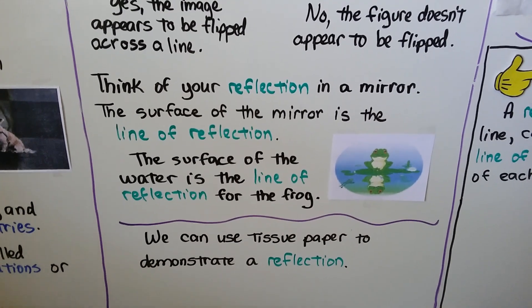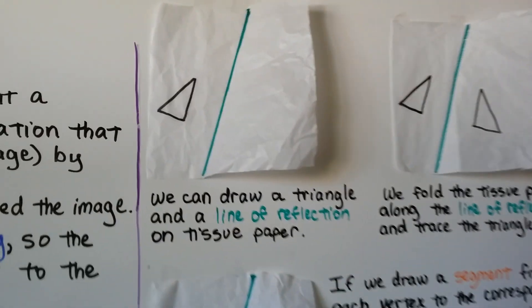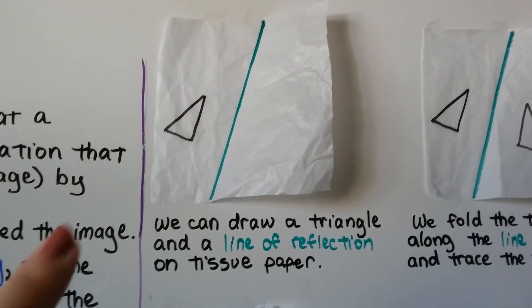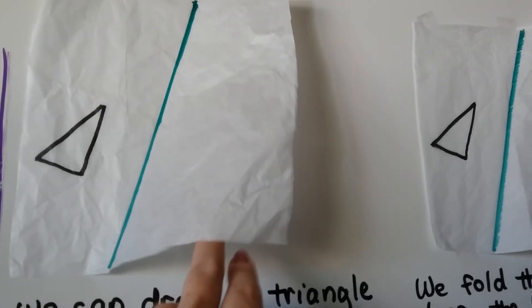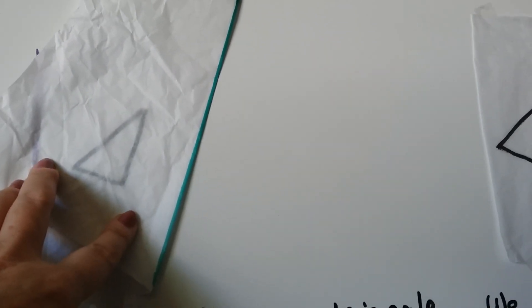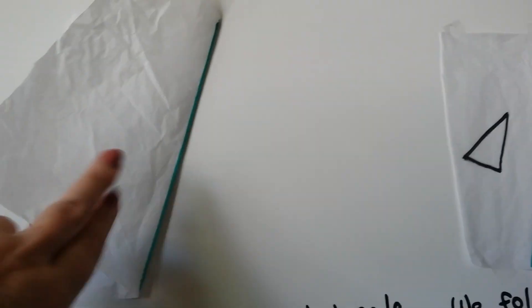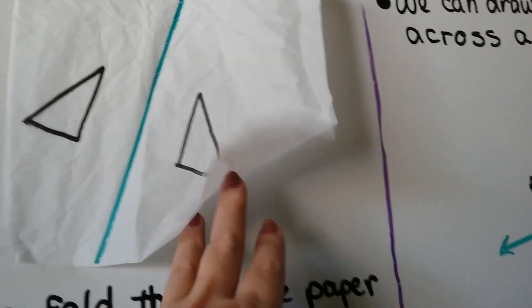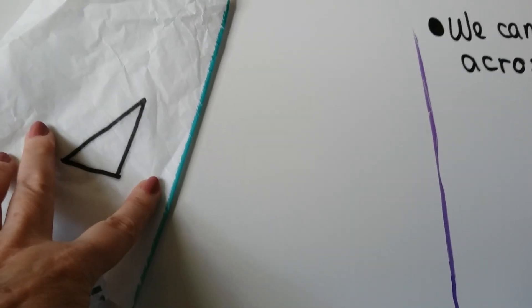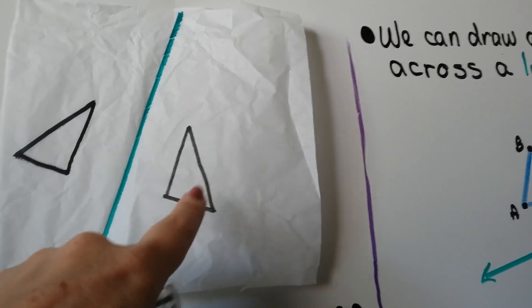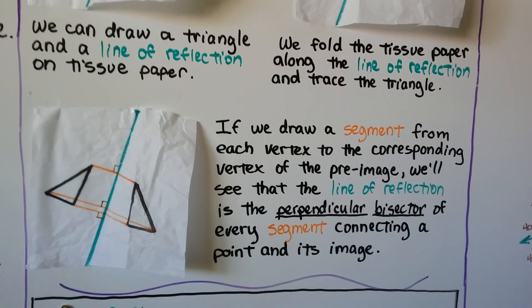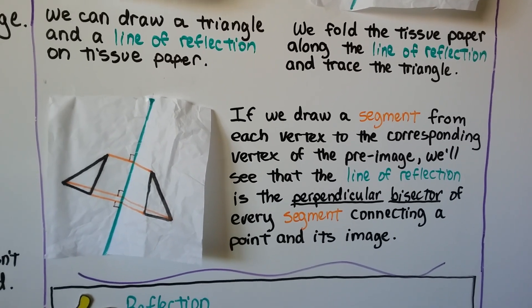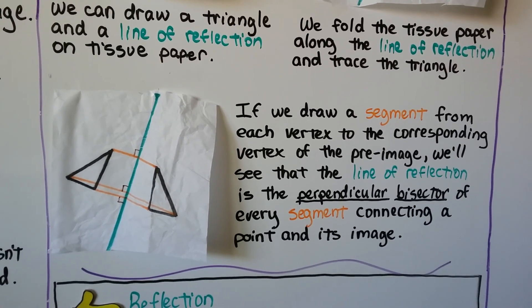We can use tissue paper to demonstrate a reflection. Draw a triangle and a line of reflection on tissue paper, then put a fold right down that line of reflection. When we fold the paper on the line of reflection, we can see the triangle through the tissue paper and trace it on the back side. When we fold it on the line of reflection, the two triangles lay right on top of each other — so this is a reflection of that triangle.